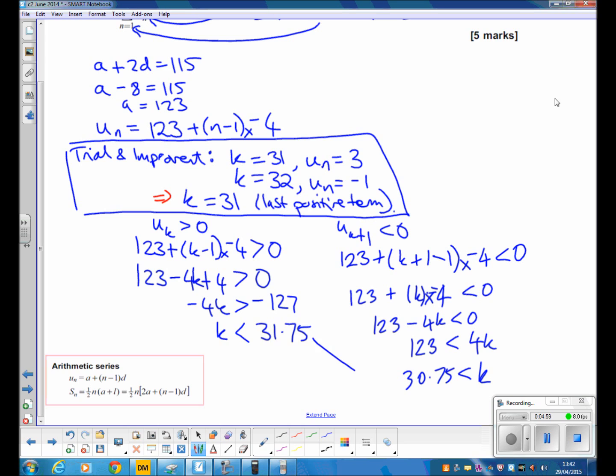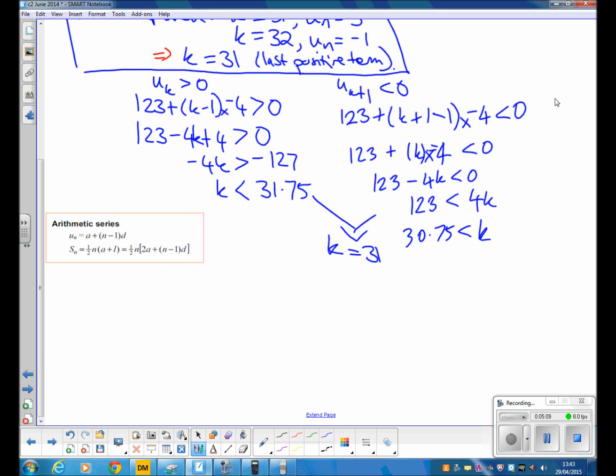Now if you combine those two facts, k is bigger than 30.75 and smaller than 31.75, k must equal 31. So either method gets you that k equals 31.